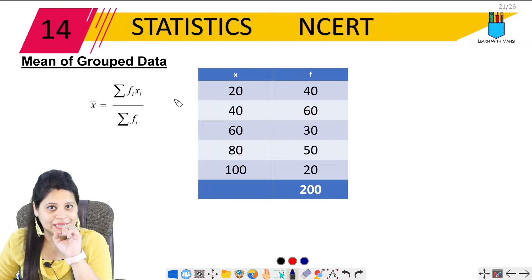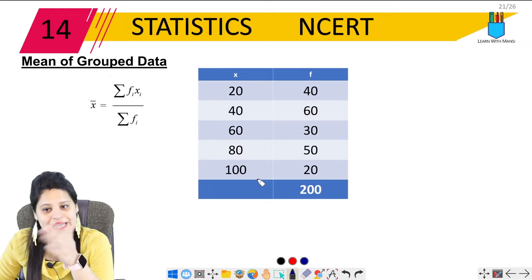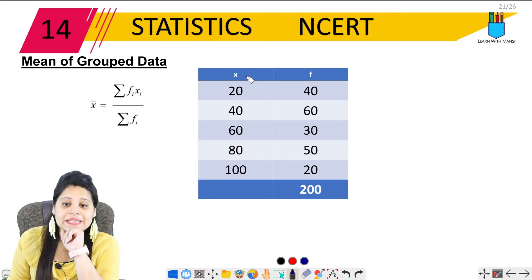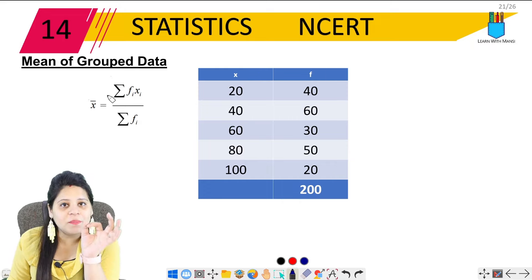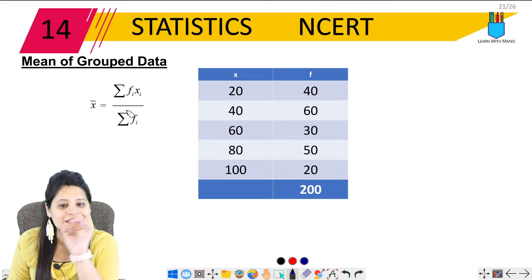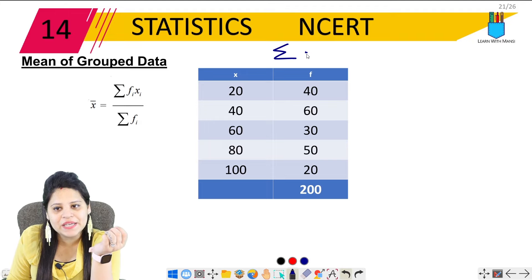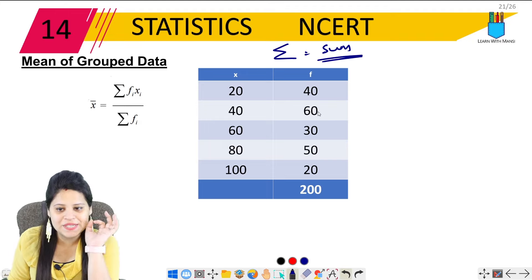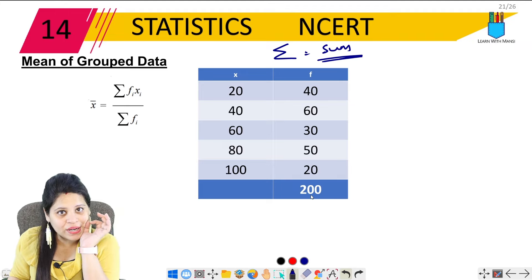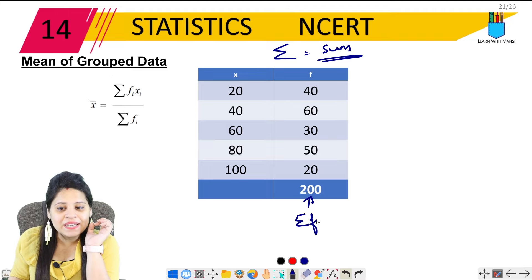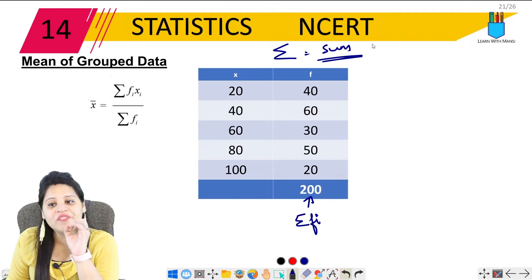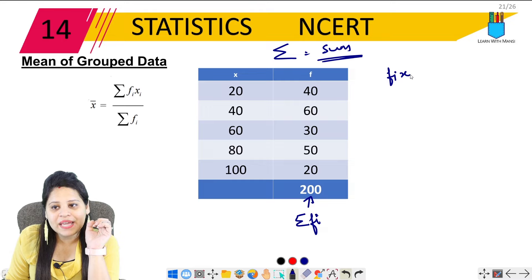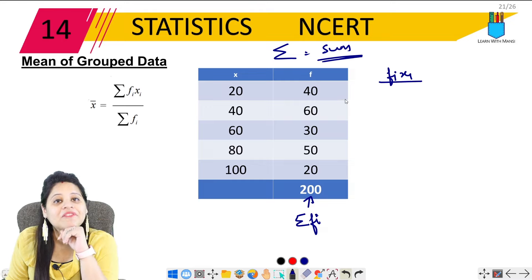So sum of observations will be 10 plus 7 plus 13 plus 20 plus 15, and number of observations, how much is it? 1, 2, 3, 4, 5. So upon 5. Let's add it: 65 upon 5 equals 13. So mean is 13.